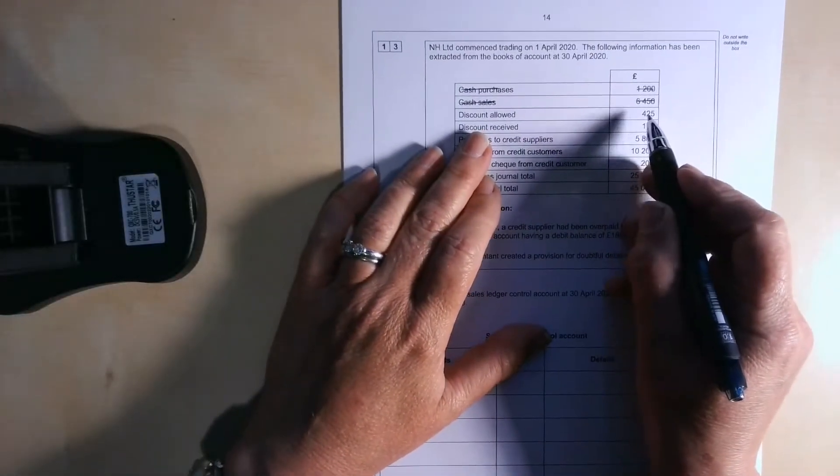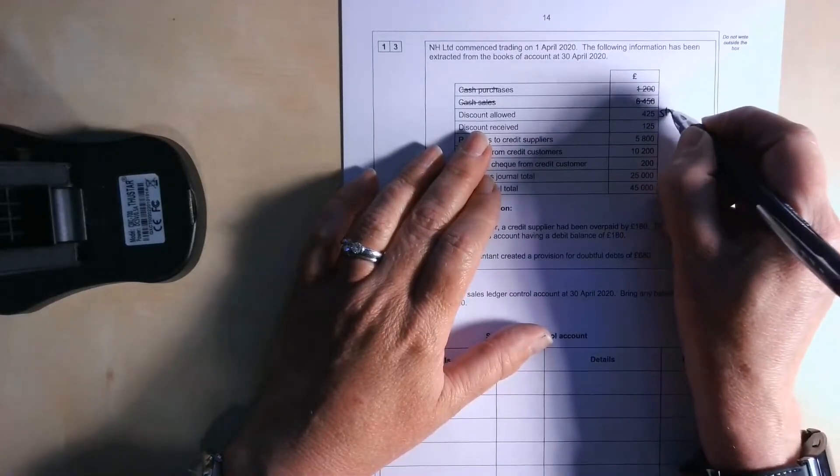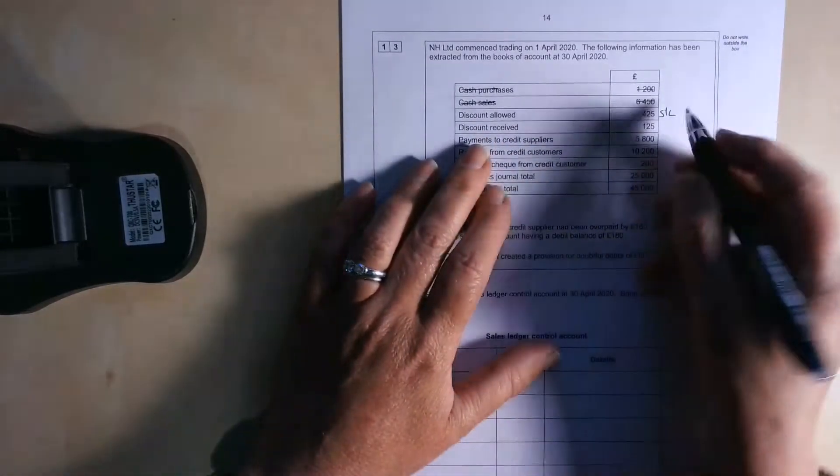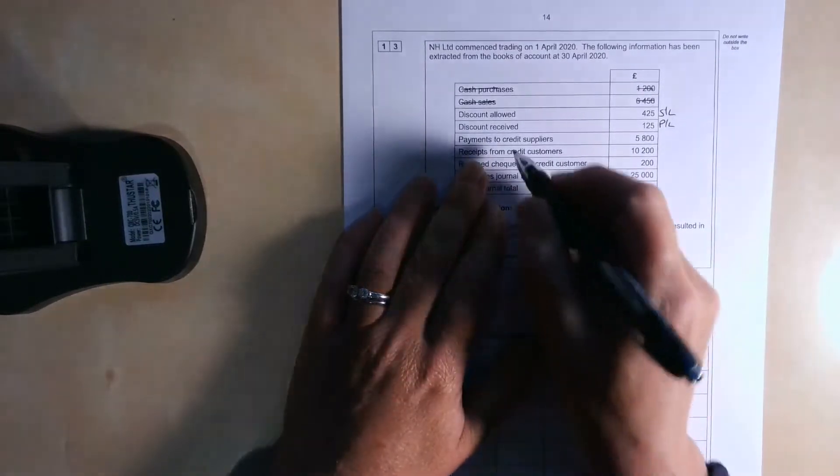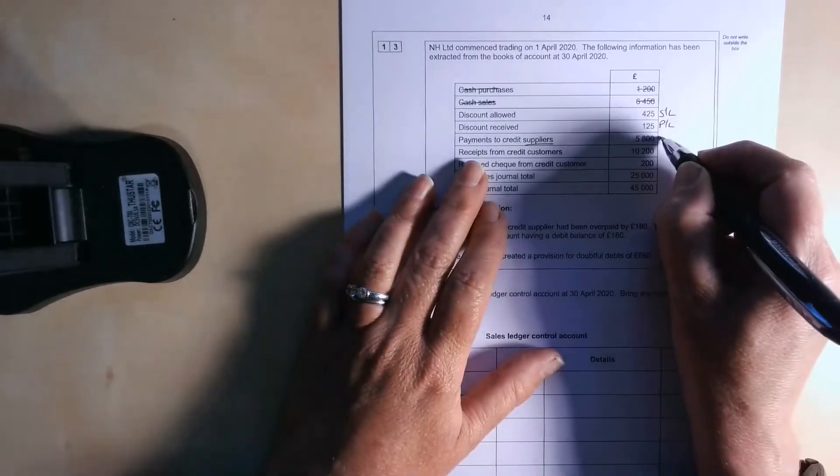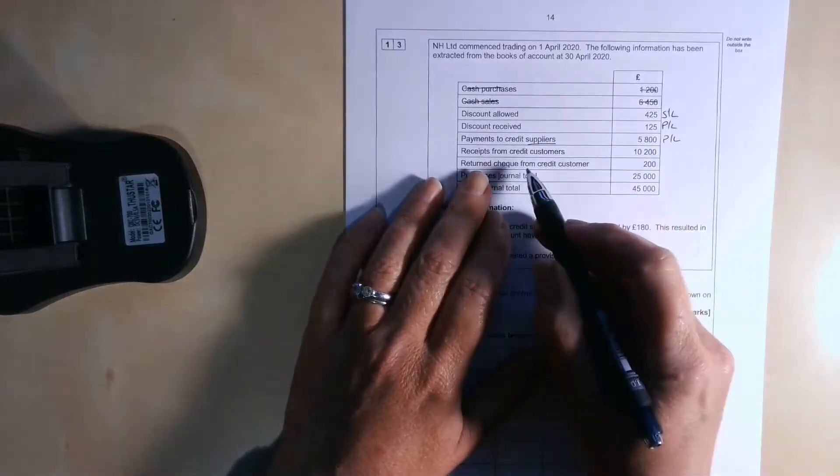So discount allowed, this is discount that is allowed to customers. So that's going to be in the sales ledger. Discount received is received from suppliers. That's going to be purchase ledger. Payments to credit suppliers, well, that's for our purchases. So that's going to be purchase ledger.